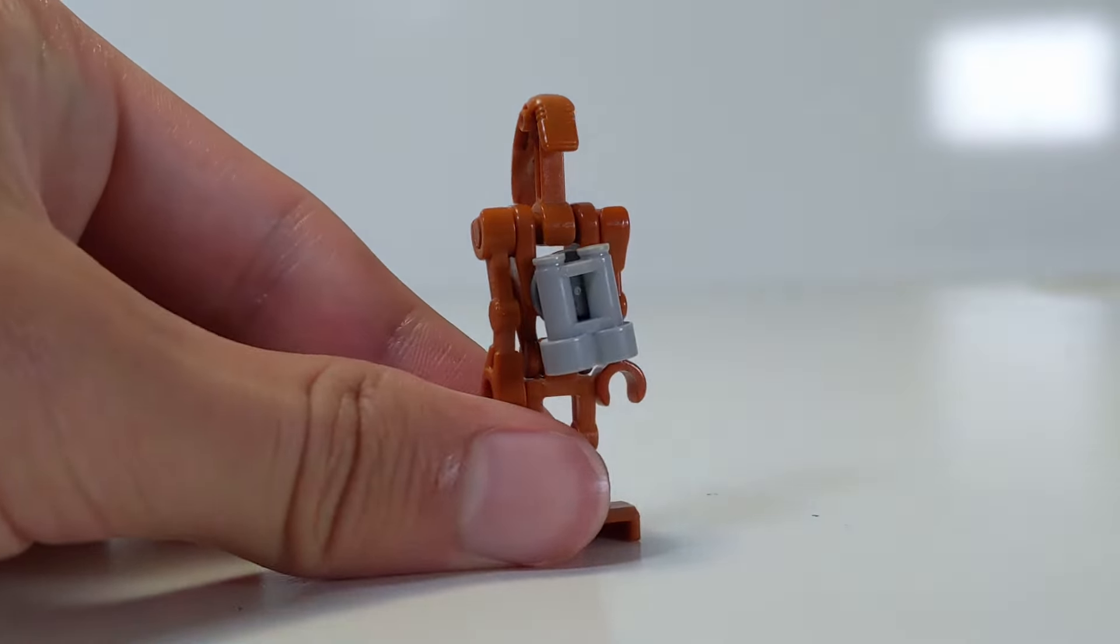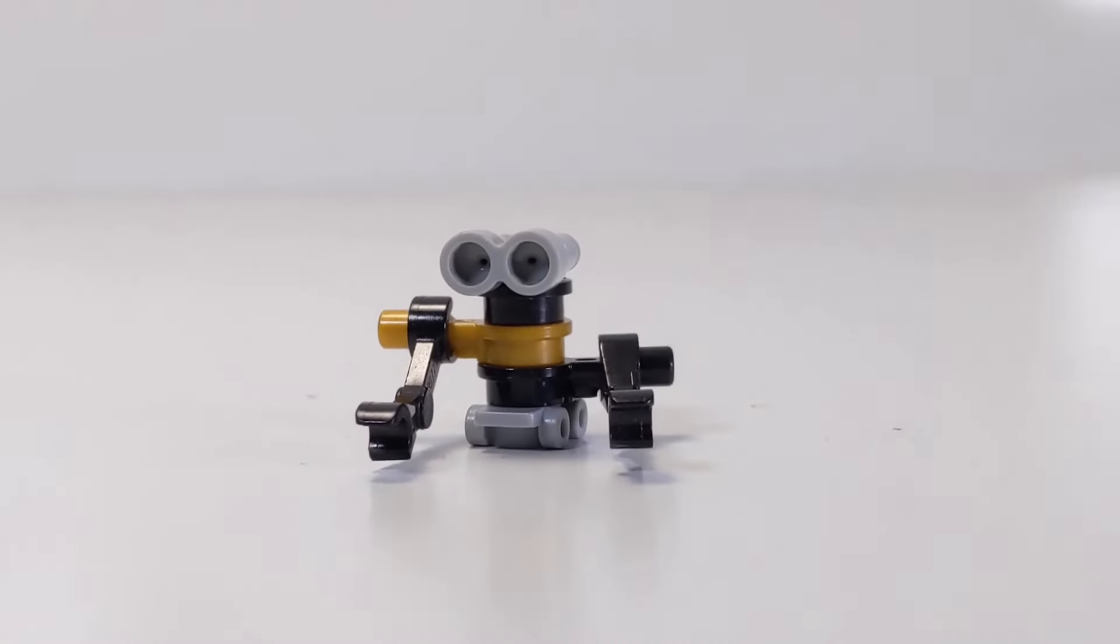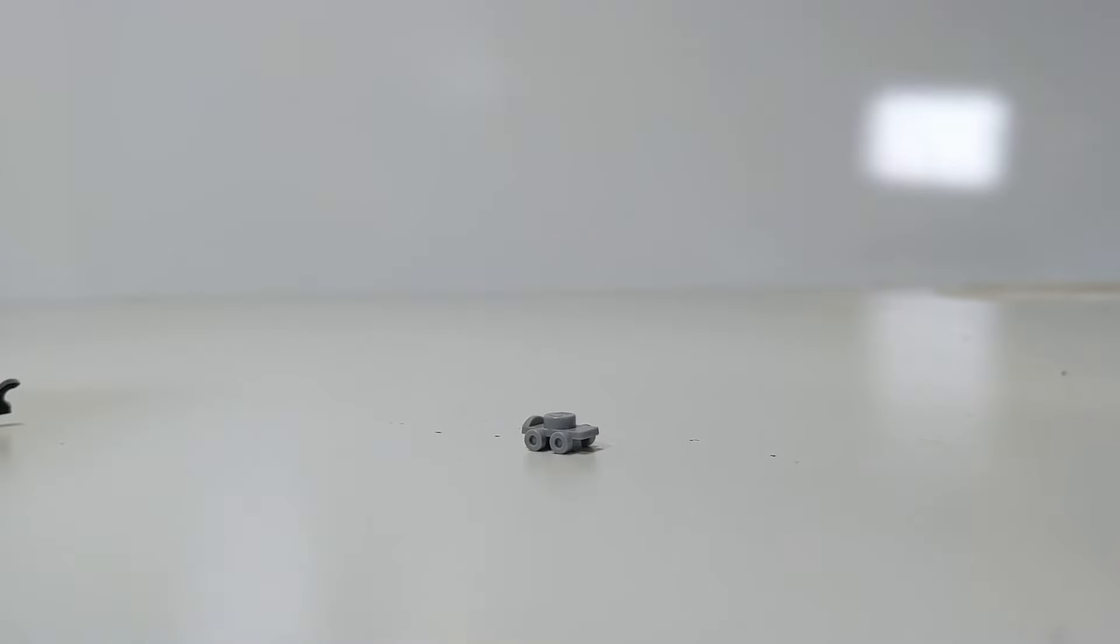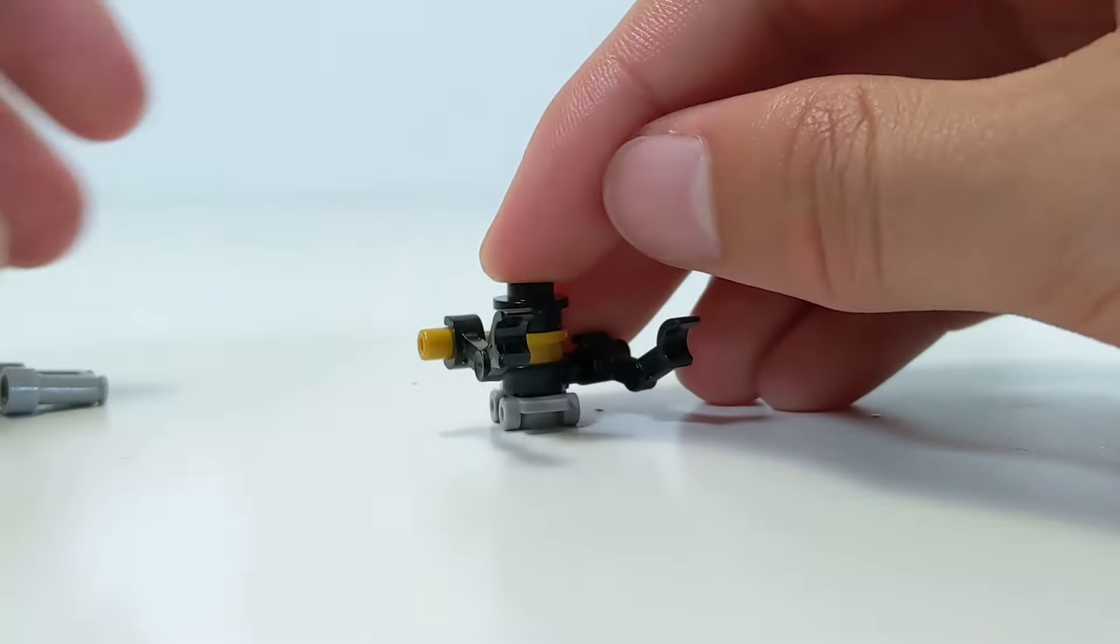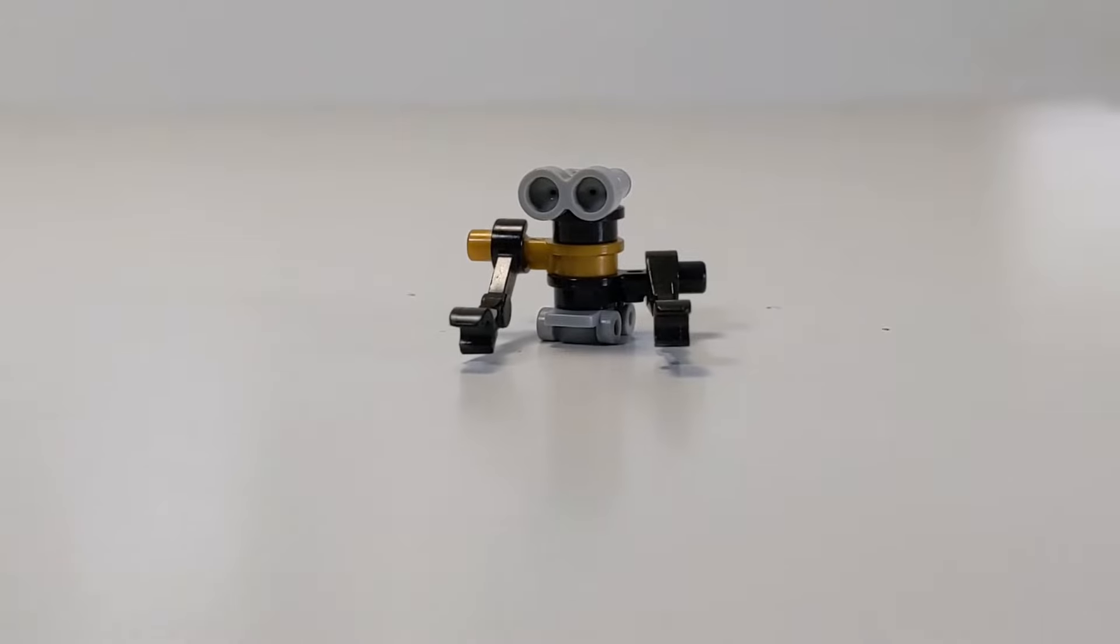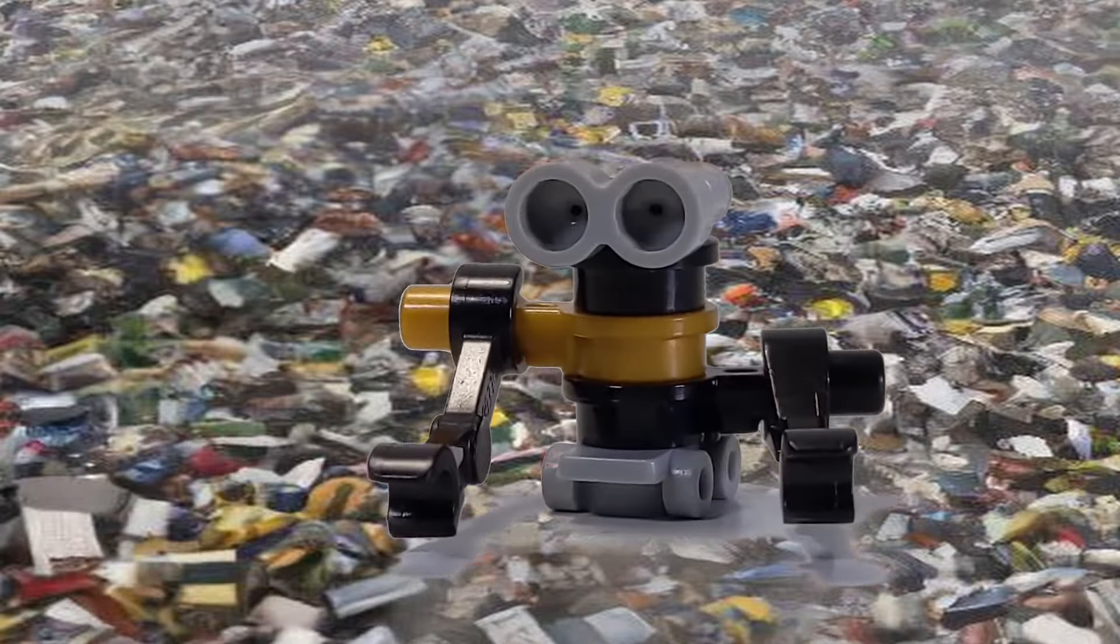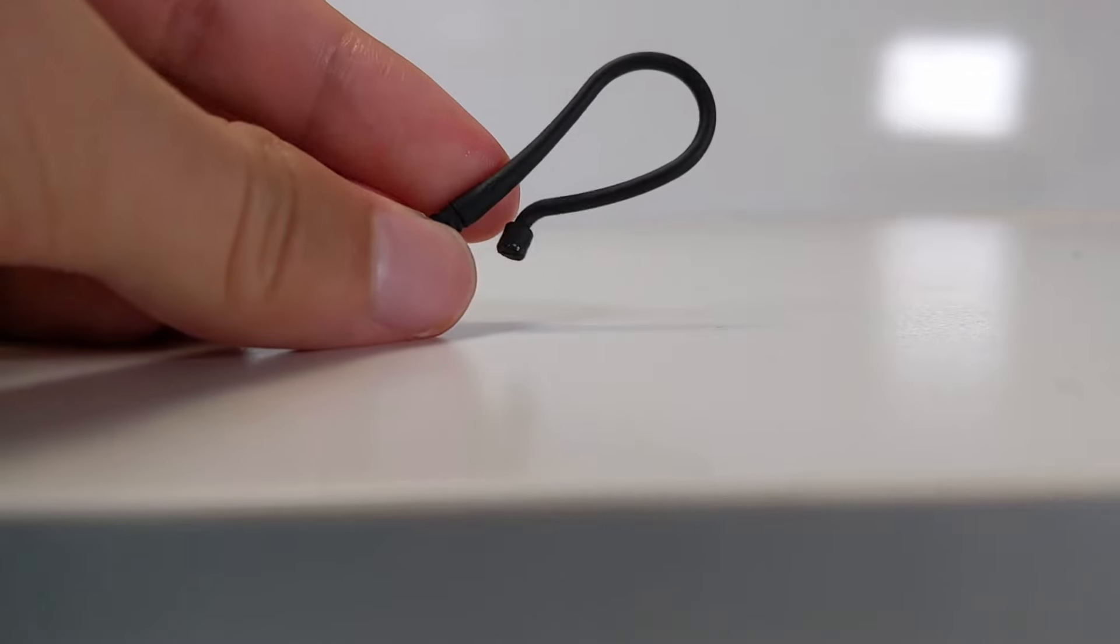Speaking of binoculars, you can use a binocular piece to build a WALL-E looking minifigure by using a roller skate piece, then a stud with a bar on it with a battle droid arm, then another one of those, and then a stud, and then the binocular piece. All right little buddy, it's time to save the world again.